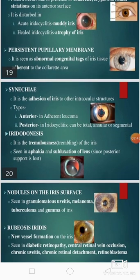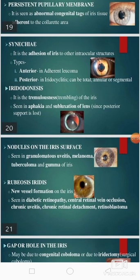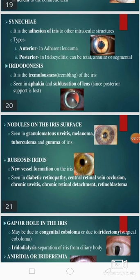Persistent pupillary membrane is seen as abnormal congenital strands of iris tissue adherent to the collarette area. Then synechia — the adhesion of iris to other intraocular structures — may be anterior synechia or posterior synechia; anterior in case of adherent leukoma and posterior in iridocyclitis.